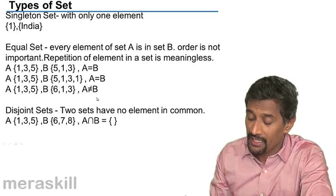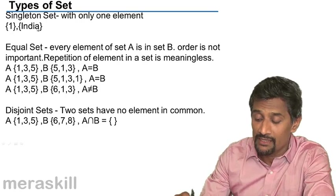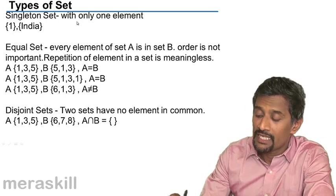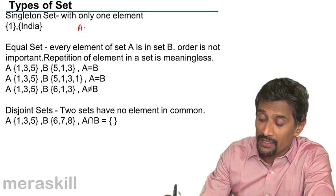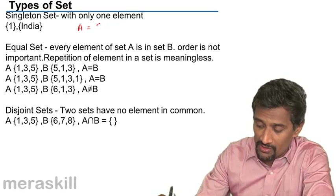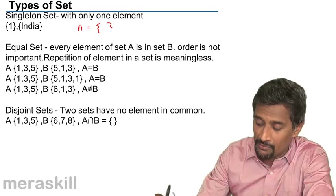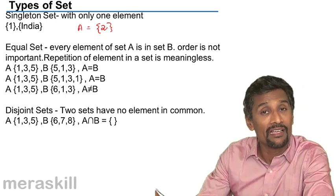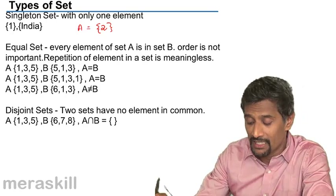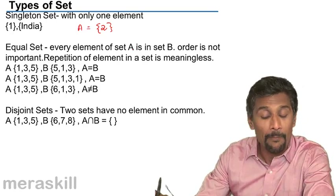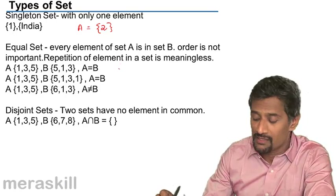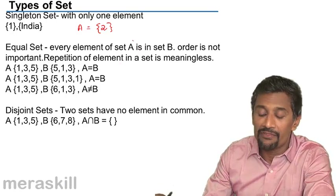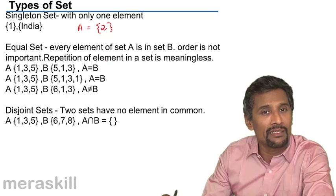Then we have the singleton set — a set which has only one element. For example, the set of even prime numbers: there is only one even prime number, which is 2, so we call it a singleton set.